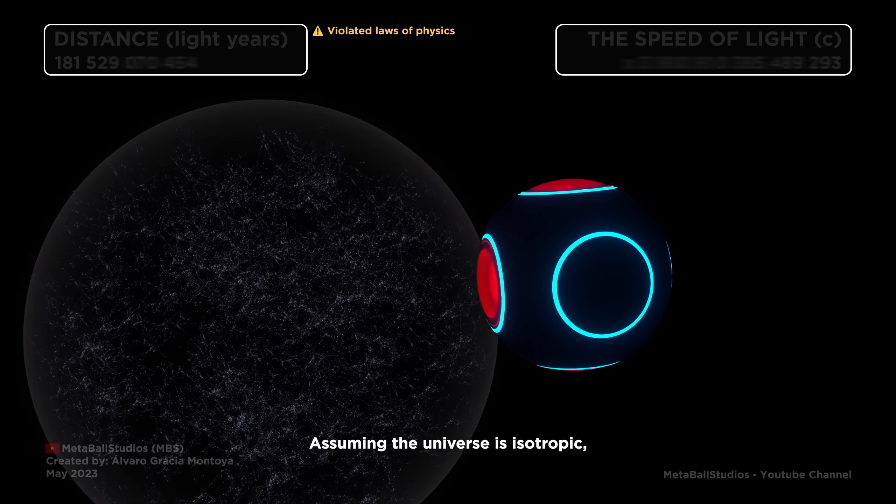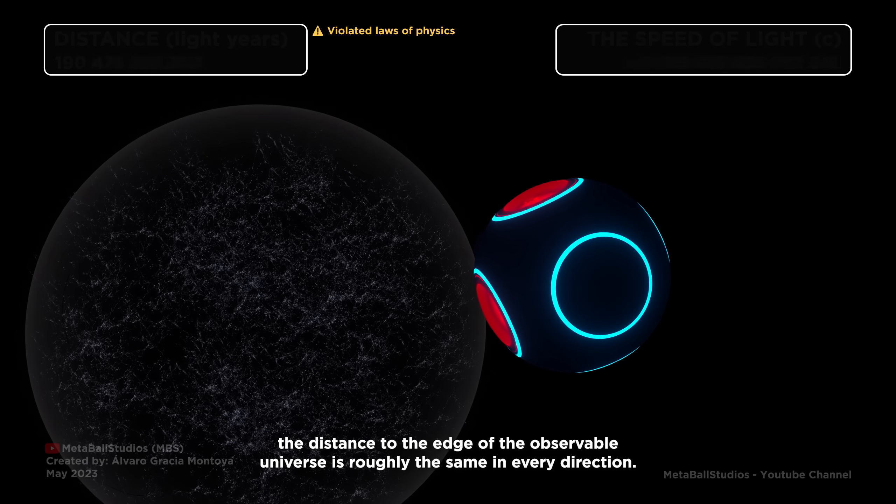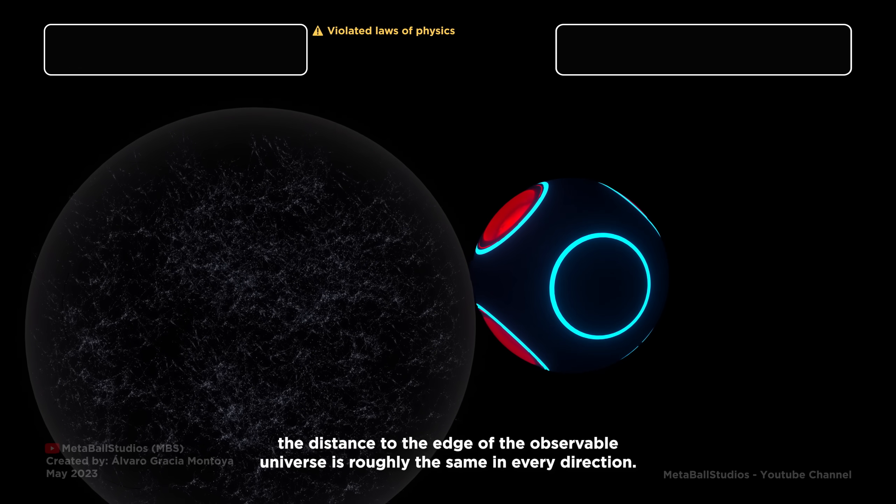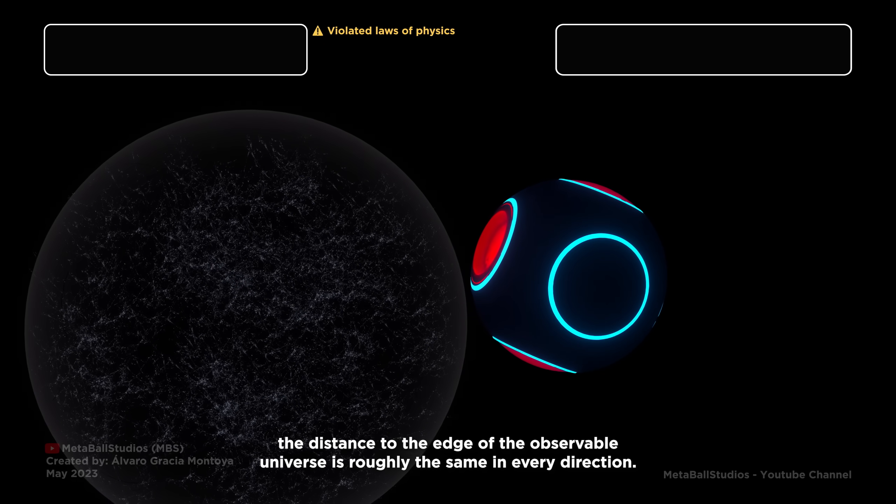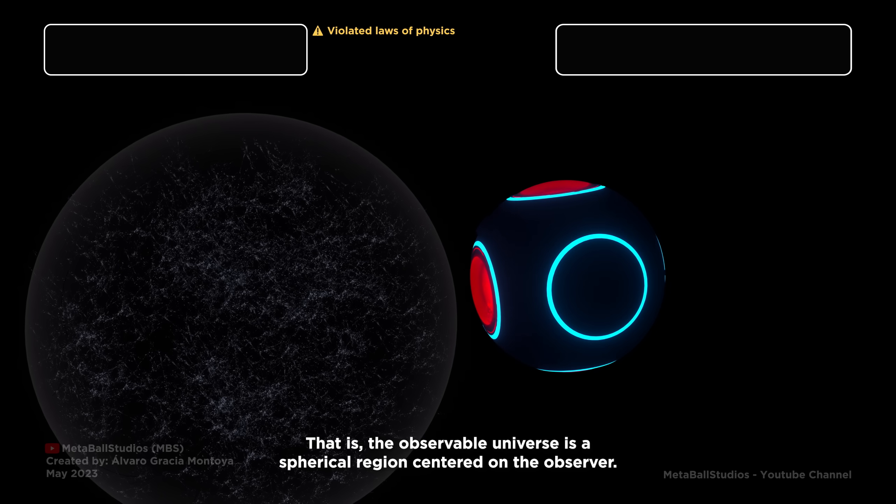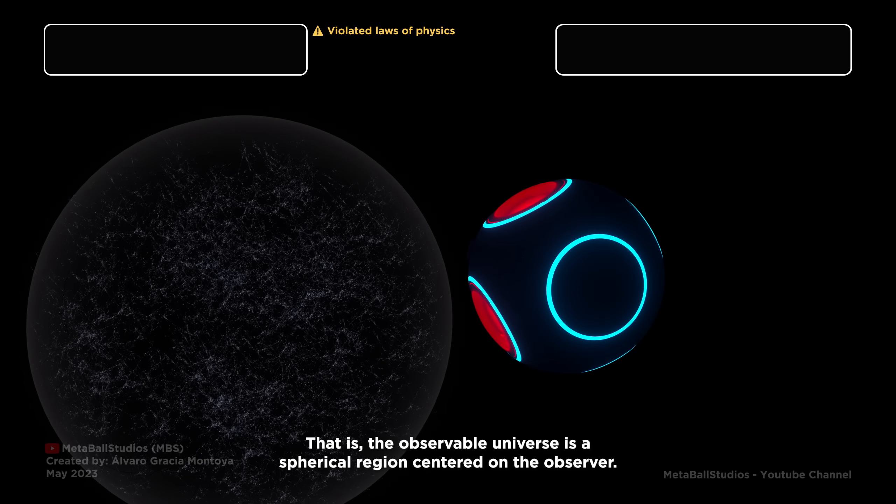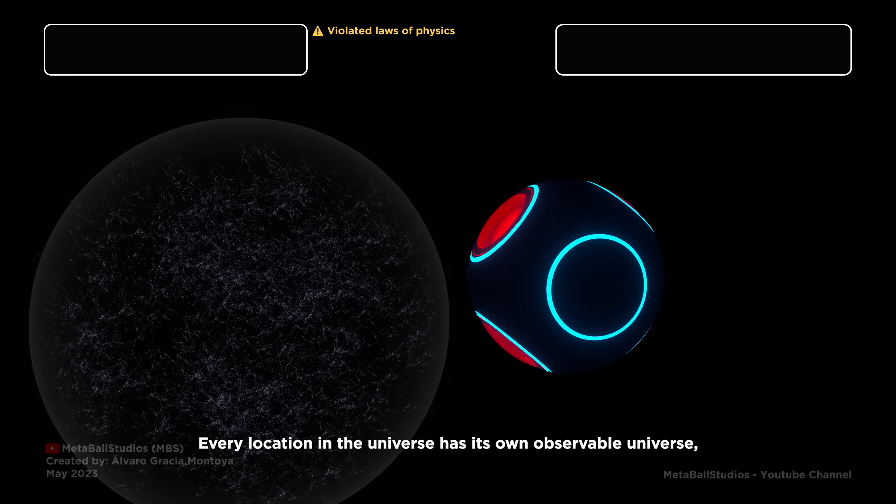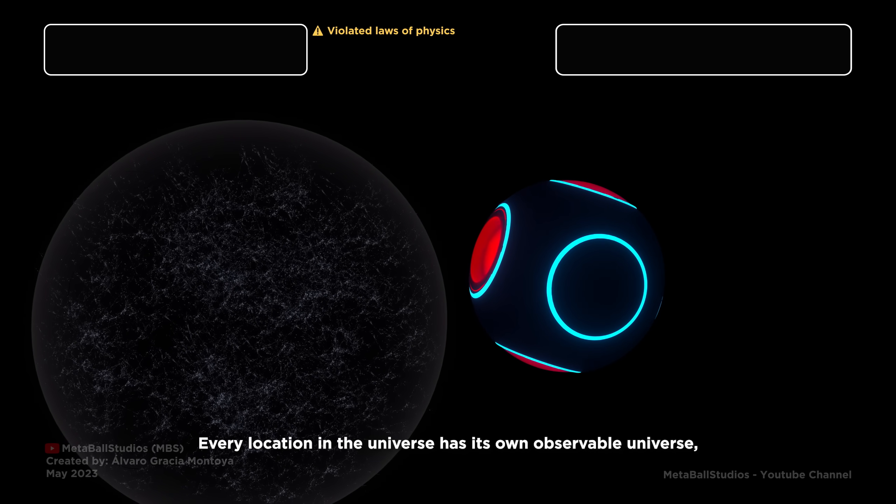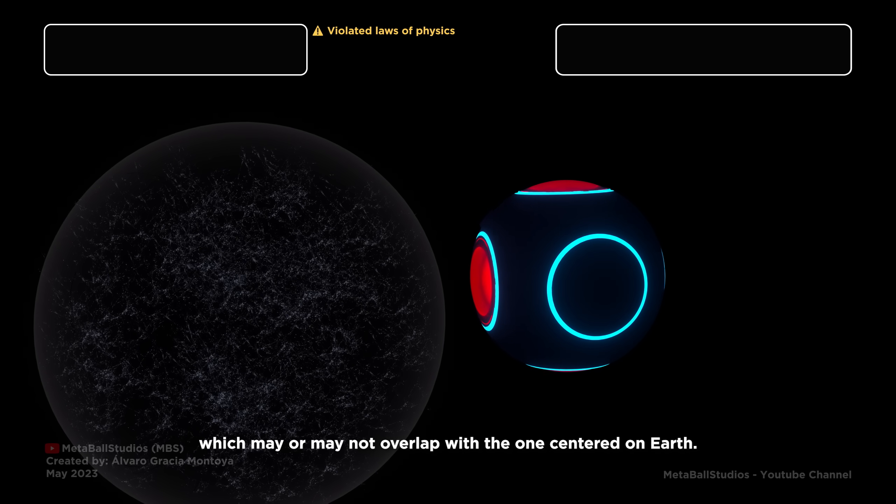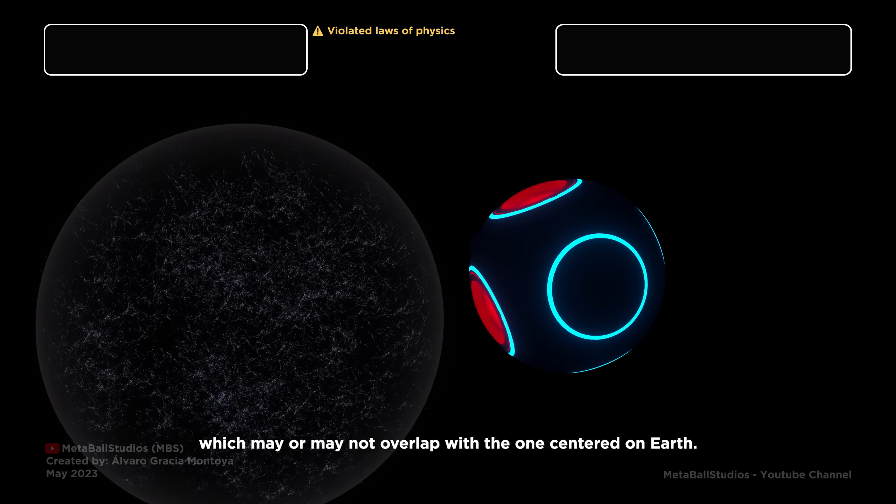Assuming the universe is isotropic, the distance to the edge of the observable universe is roughly the same in every direction. That is, the observable universe is a spherical region centered on the observer. Every location in the universe has its own observable universe, which may or may not overlap with the one centered on Earth.